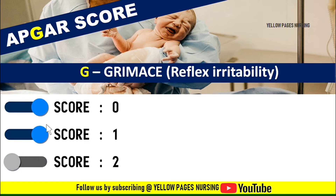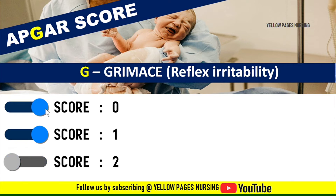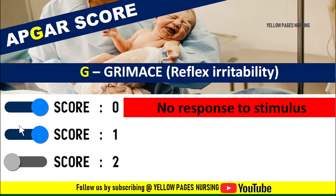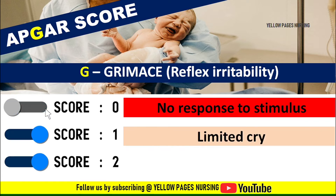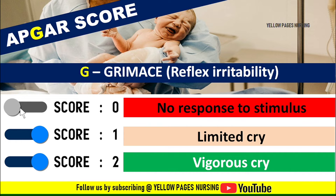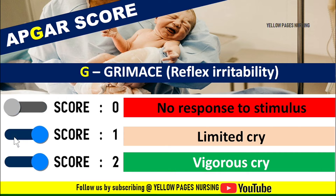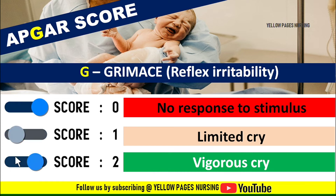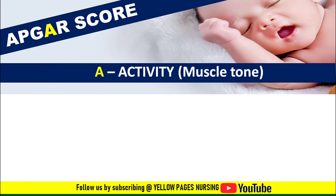Next comes Grimace, or reflex irritability — a term describing the response to stimulation such as a mild pinch. Score 0 indicates no response to the stimulus. Score 1 indicates a limited cry or grimacing. Score 2 indicates a vigorous cry in response to stimulation.